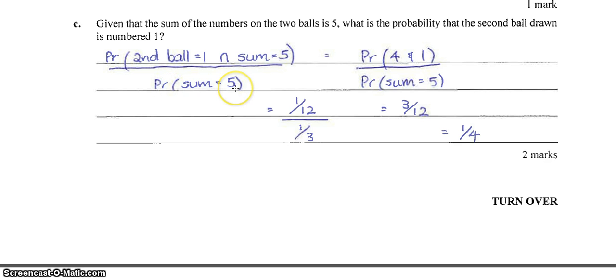So the formula for conditional probability would state that that would be the intersection of those two things divided by the probability that the sum of the two balls is 5. So if the second ball is 1 and the sum of the two balls is 5, then that can only happen when the first ball is a 4 and the second ball is a 1. So the probability of that is 1 on 12. And we just worked out that the probability that the sum of two balls being 5 is 1 on 3. So 1 on 12 divided by 1 on 3 is 3 on 12, which is 1 quarter.